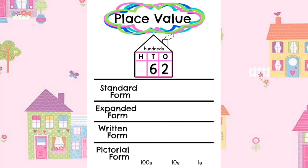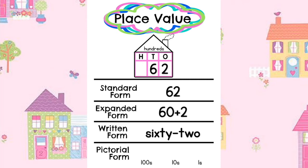Here is the number 62 in standard form. In expanded form the number is written as 60 plus 2. Here is the number 62 in written form. And in pictorial form we draw 6 tens and 2 ones.